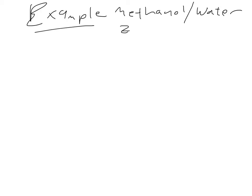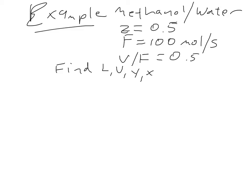We have a given concentration of methanol in the feed, a flow rate of 100 mole per second, and a specification of the vapor-to-feed ratio of 0.5. This is the information we're given, and we want to find L, V, Y, X.